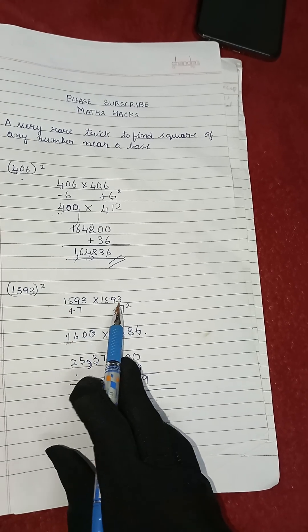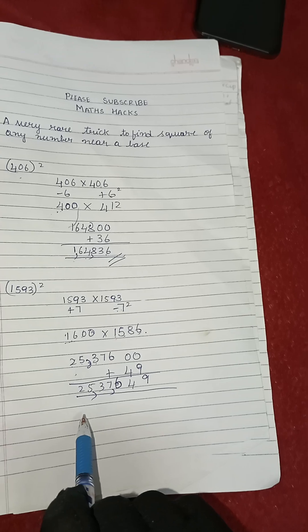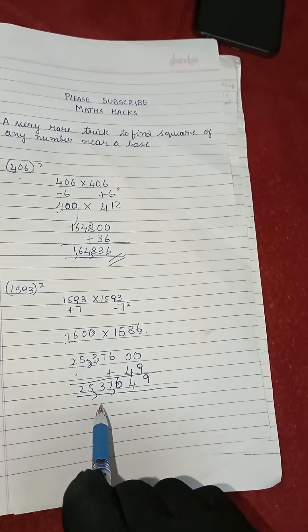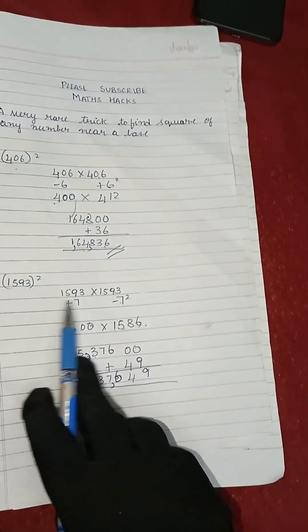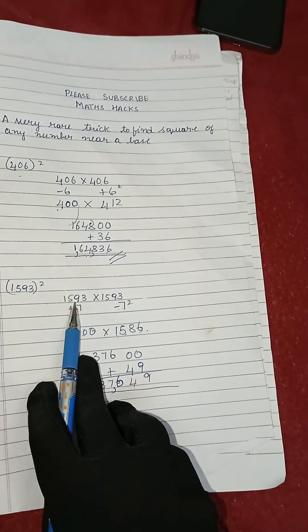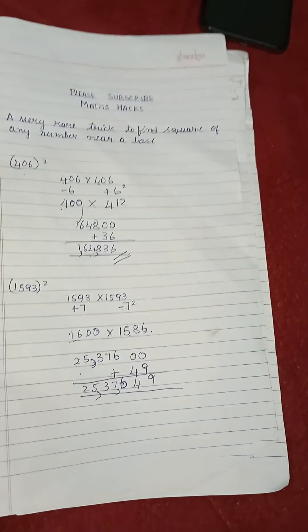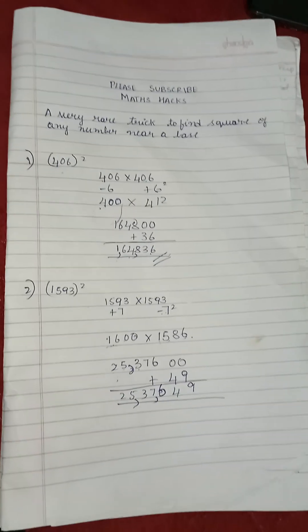So 1593 multiplied by 1593, you will get the final answer. We solved such a big number multiplication in an easy way. I hope you all liked this.